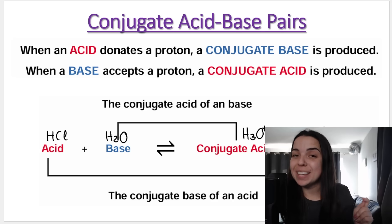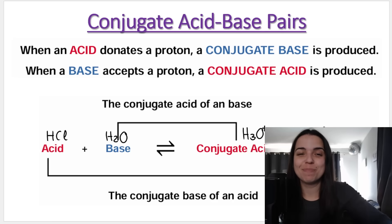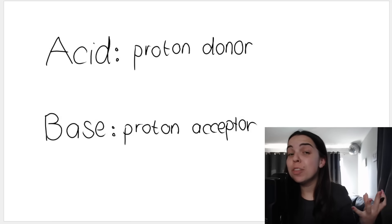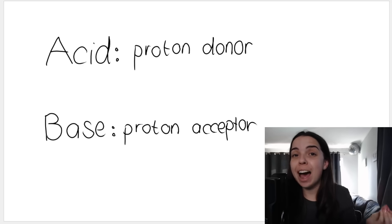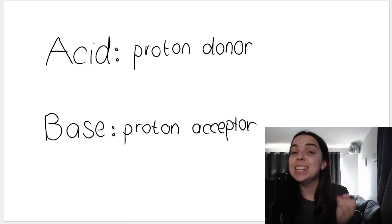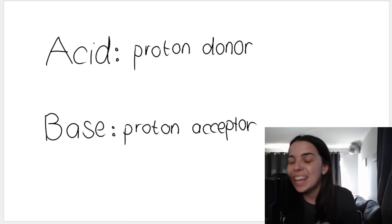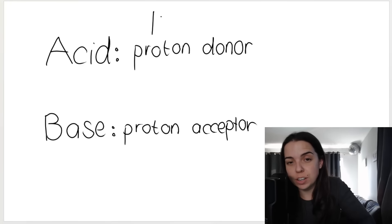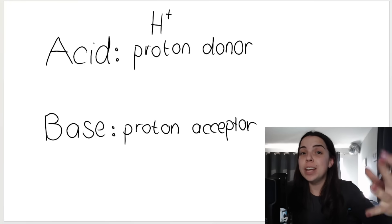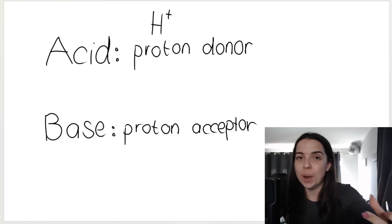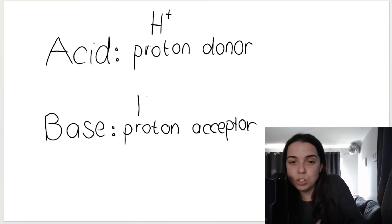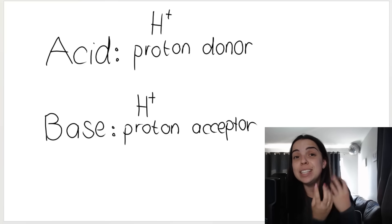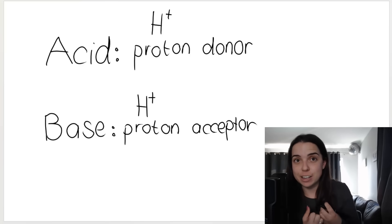Conjugate acid-base pairs. Before we speak about those, I just want to remind you about the Lowry-Bronstead definition of an acid and a base. An acid is considered to be a proton donor — it donates, it gives away an H plus ion. A base is a proton acceptor — it receives that H plus ion.